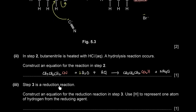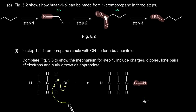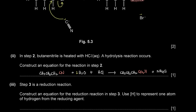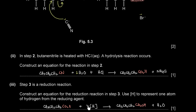Step 3 is a reduction reaction. Construct an equation using [H] to represent one hydrogen atom from the reducing agent. Butanoic acid (CH₃CH₂CH₂CO₂H) + 4[H] → butan-1-ol (CH₃CH₂CH₂CH₂OH) + H₂O. Two hydrogens are added to the carbonyl and one oxygen is lost as water, requiring 4 hydrogens total.